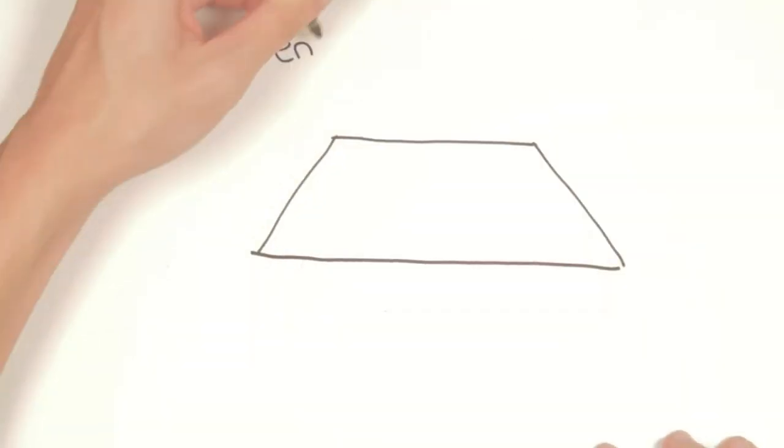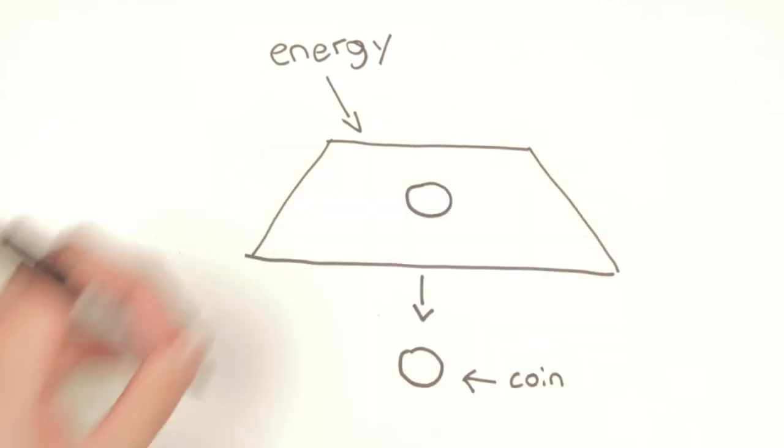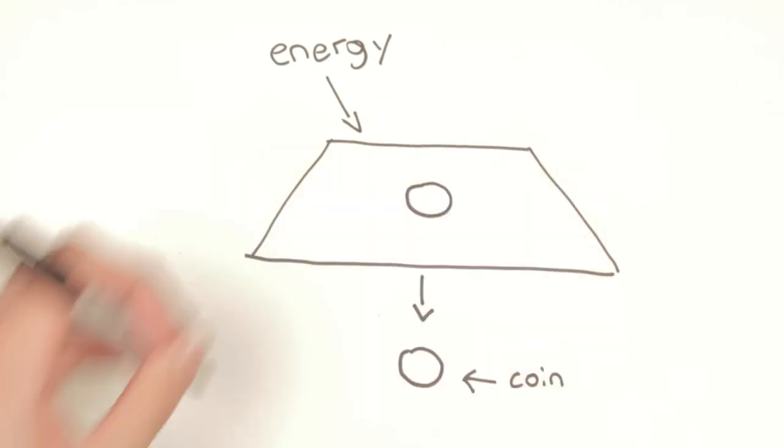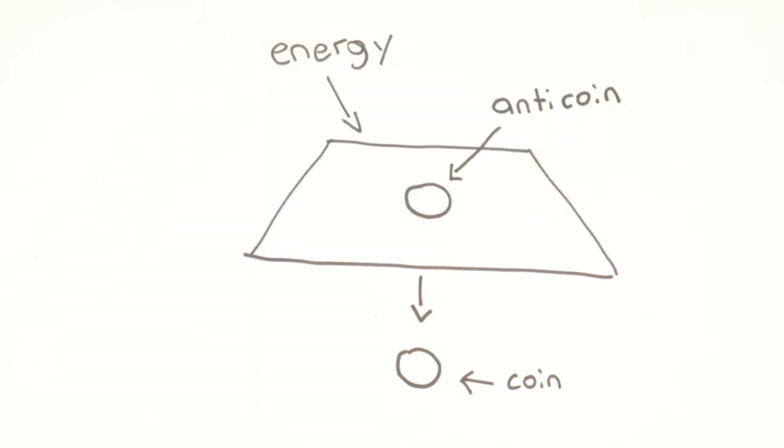Say we have a sheet of metal, which represents energy, and we cut out a circular portion of the sheet to make a coin. This coin represents a particle of matter, since matter is just concentrated energy. When we create the coin, we are left with two things: the coin and the anticoin, which is represented by the space where the coin used to be in the sheet.